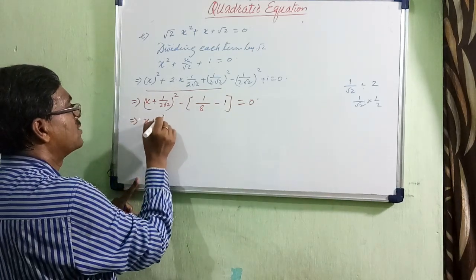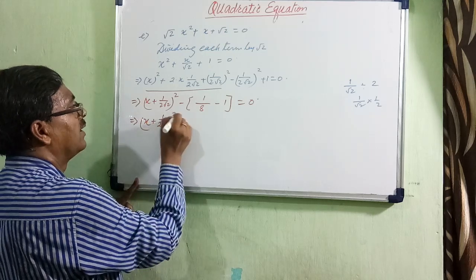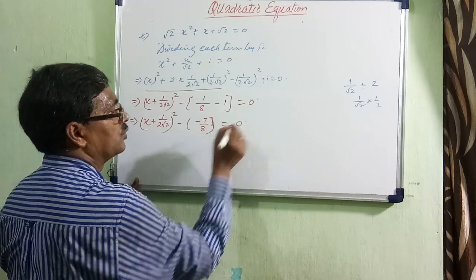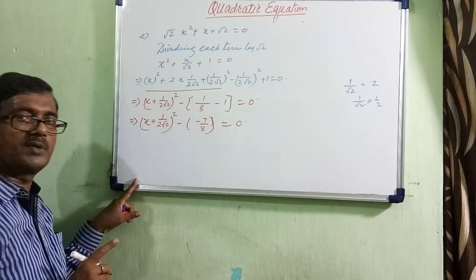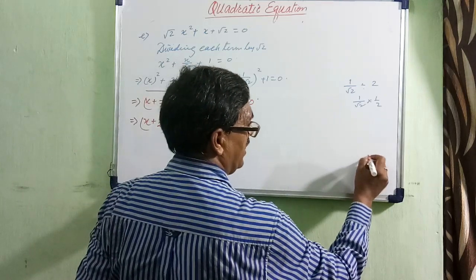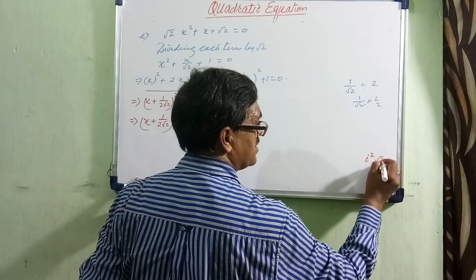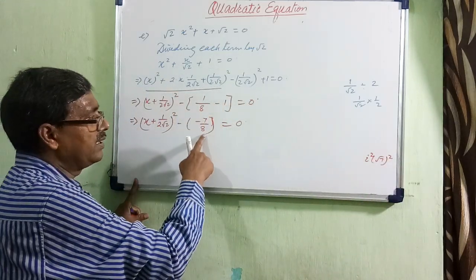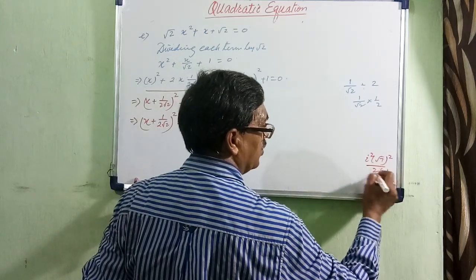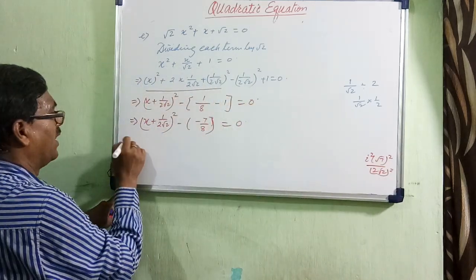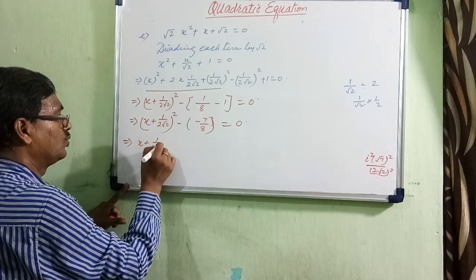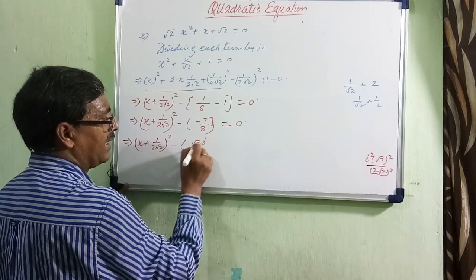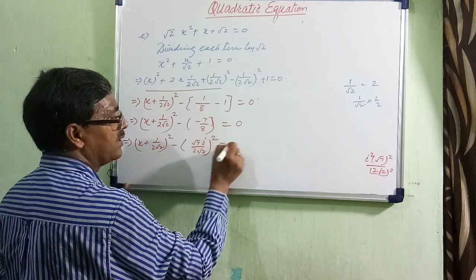This gives x plus 1 over 2 root 2 whole squared minus 7 by 8 equals 0. The square of which number is minus 7 by 8? Minus is i squared, and root 7 squared gives 7, while 2 root 2 whole squared gives 8. So this can be written as x plus 1 over 2 root 2 whole squared minus root 7 times i over 2 root 2 whole squared equals 0.